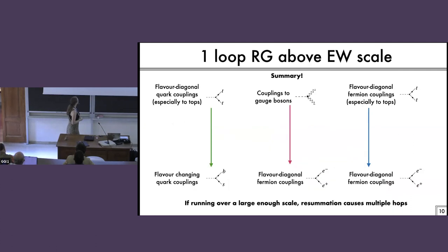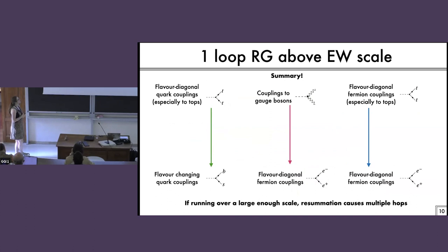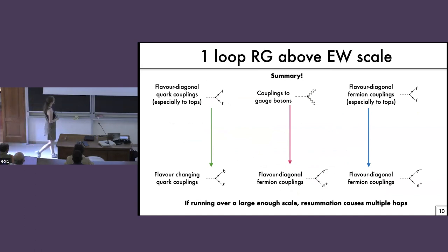To summarize: if you start off with flavor-diagonal quark couplings, especially to tops, then you're going to get flavor-changing quark couplings. If you start off with couplings to gauge bosons, you're going to get flavor-diagonal fermion couplings. And likewise, if you have flavor-diagonal fermion couplings, you're going to get all other flavor-diagonal fermion couplings. If you're running over a large enough scale, this becomes important.